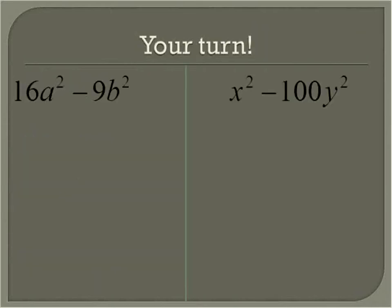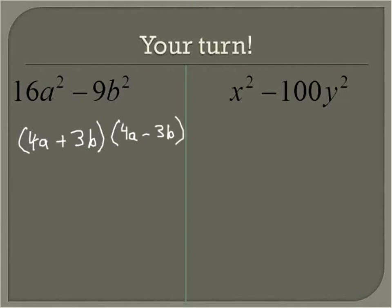I'm going to do a couple more here. You can pause the recording and see if you can solve these, then come back to see what I write down for the answers. We take the square root of the first term plus the square root of the second term, then the square root of the first term minus the square root of the second term. Let's do it again — same pattern.